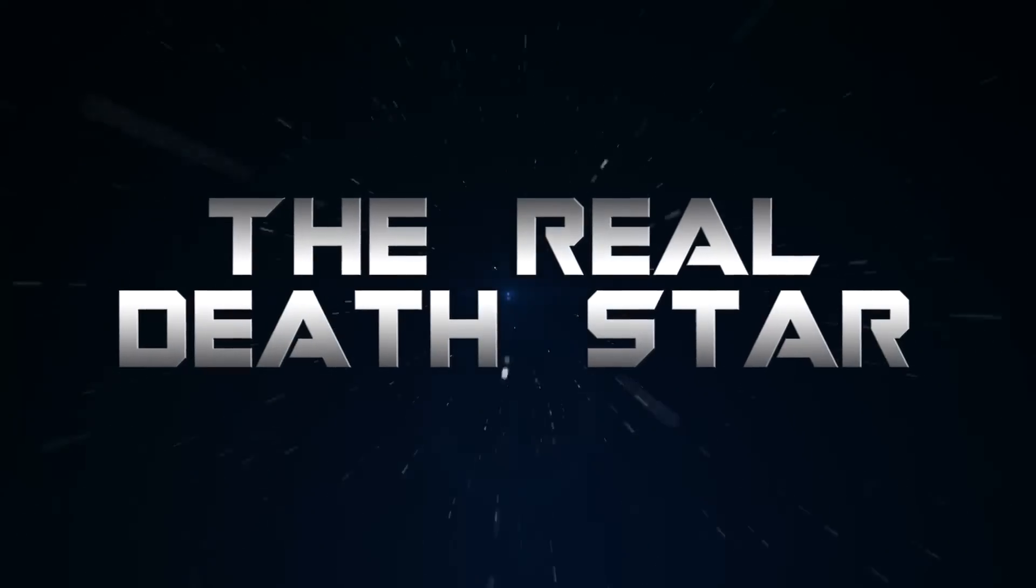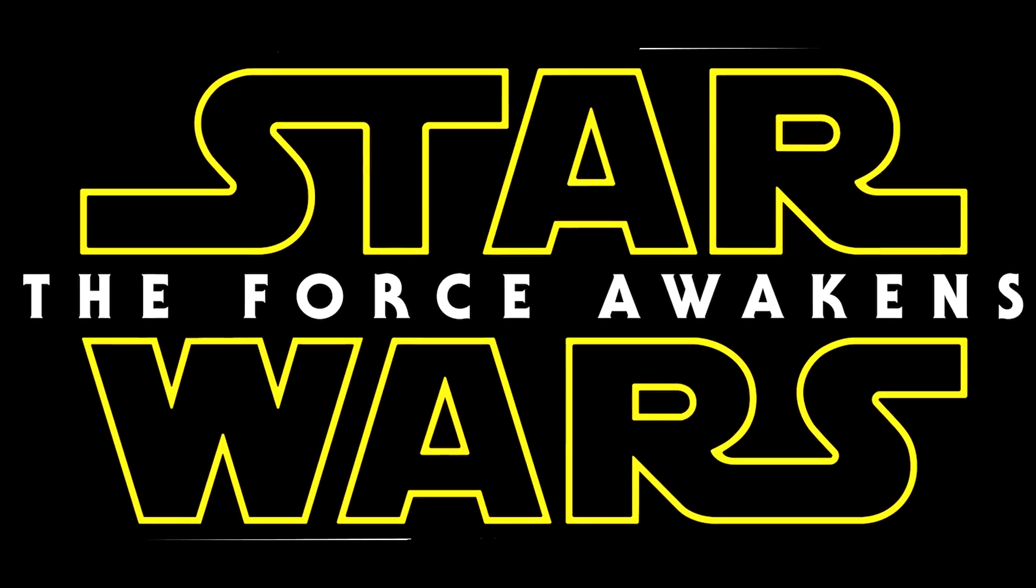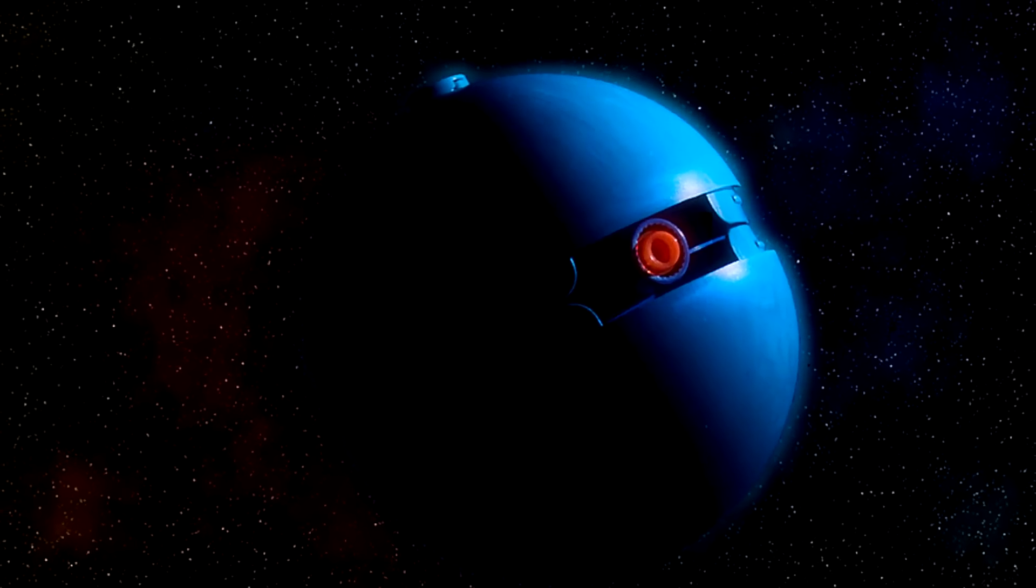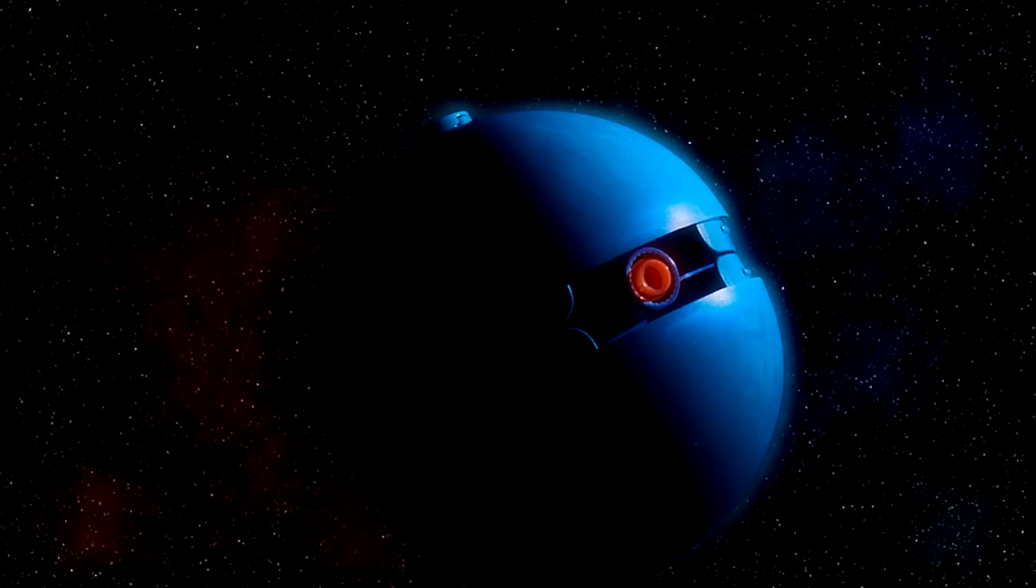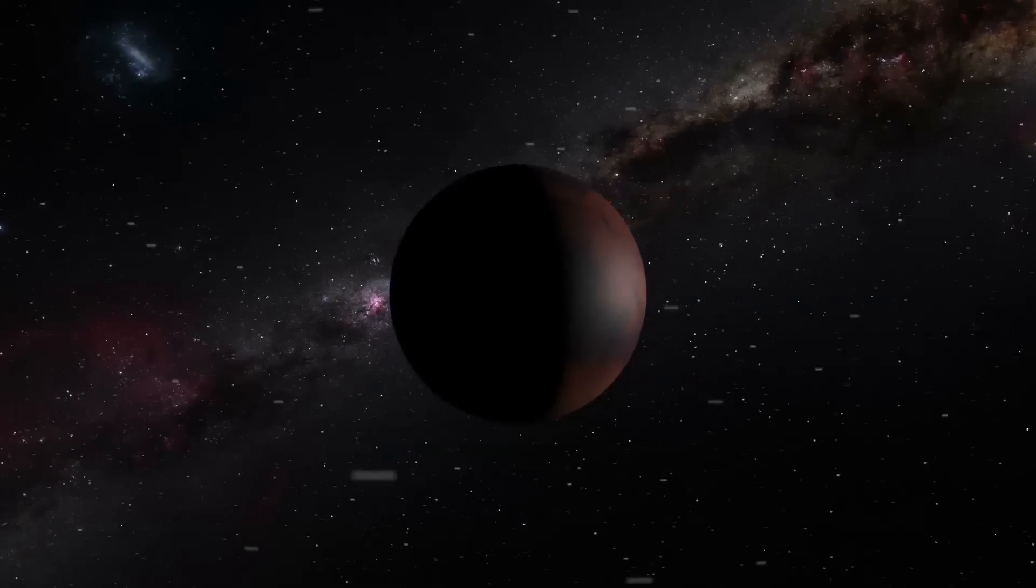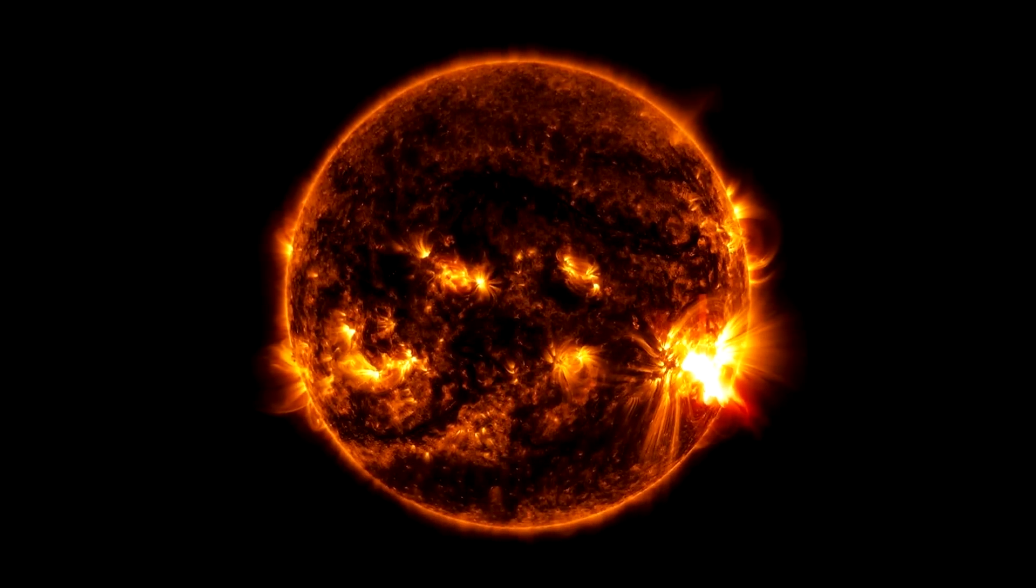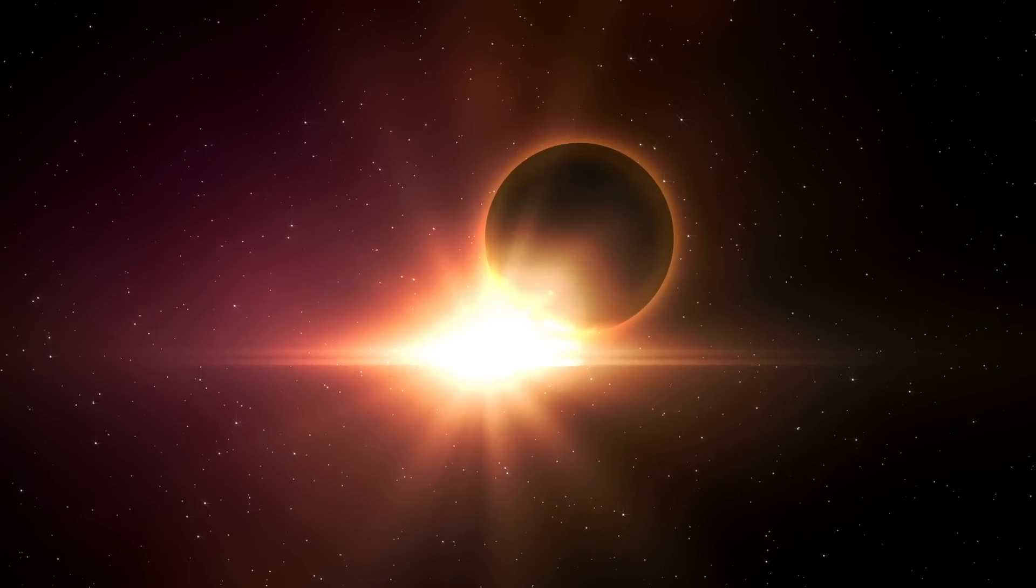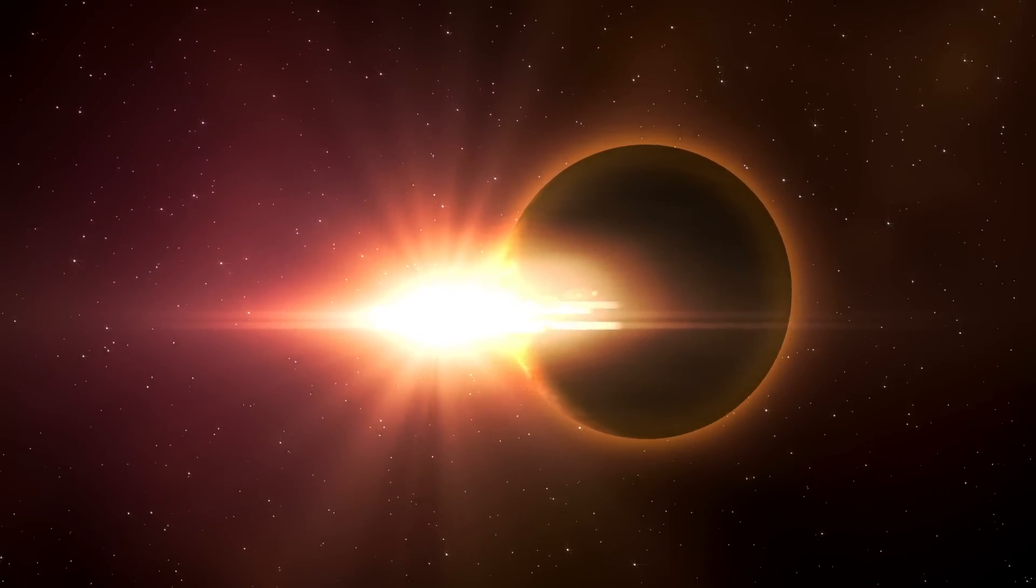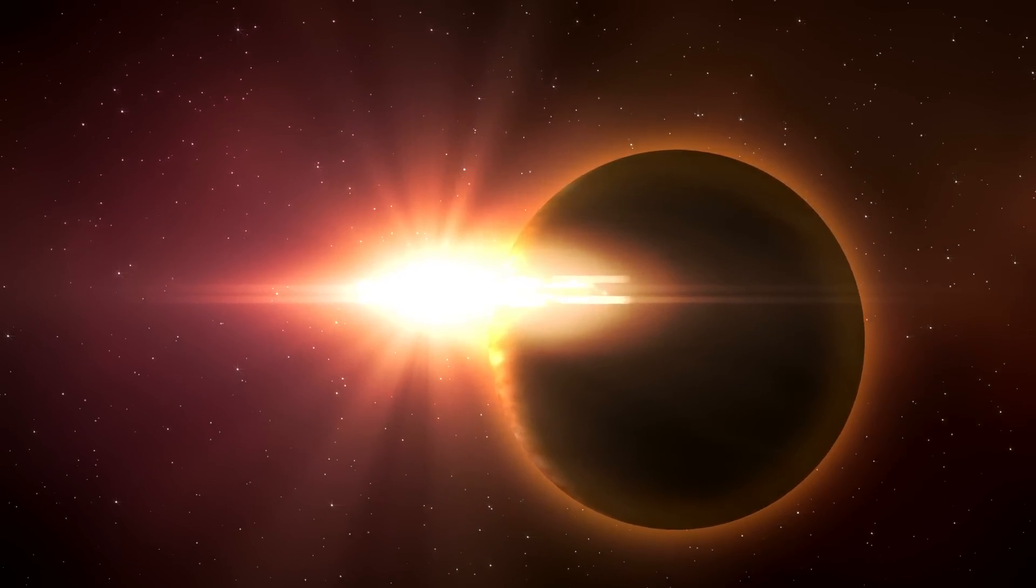The real Death Star. Now, if you saw Star Wars The Force Awakens, you'll definitely remember the Death Star ripoff known as Starkiller Base. In the movie, the Starkiller Base is a planet-like headquarters that drains the energy of the solar system's sun to power its own weapon. However, would it really surprise you that the Starkiller Base is actually based on a real cosmic entity?